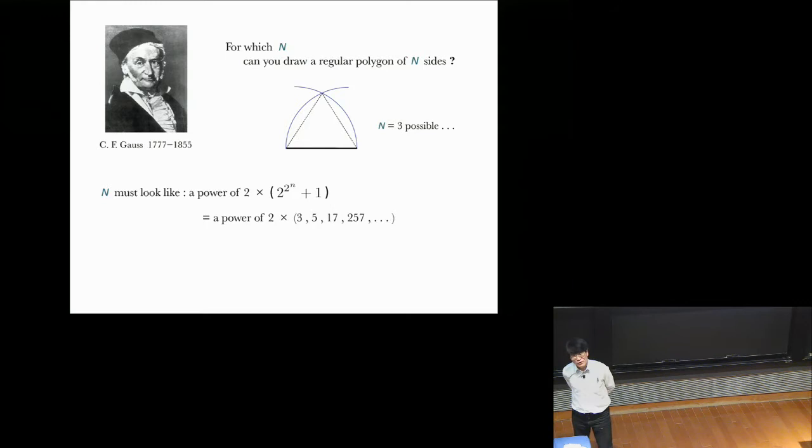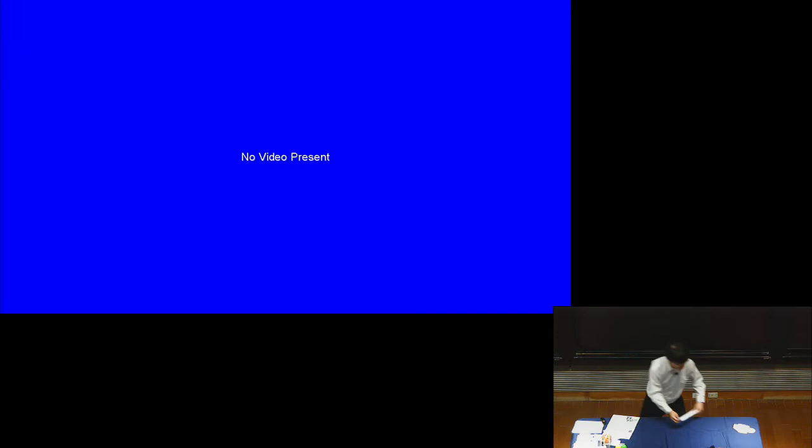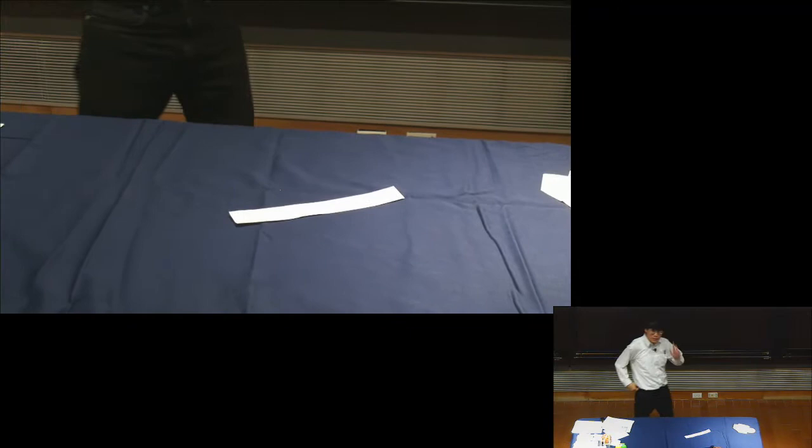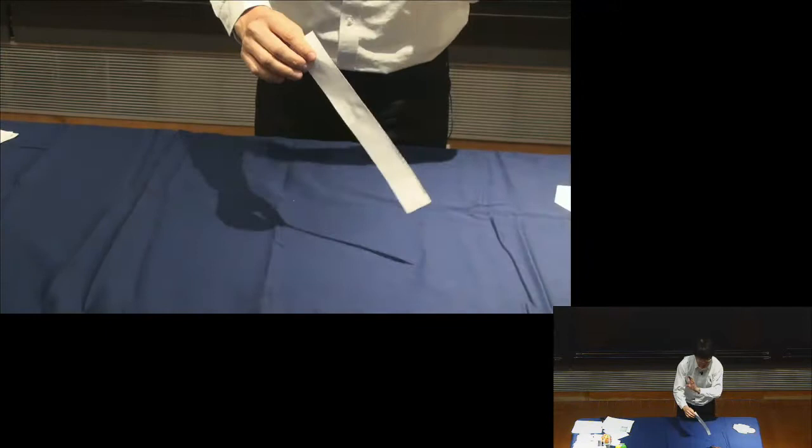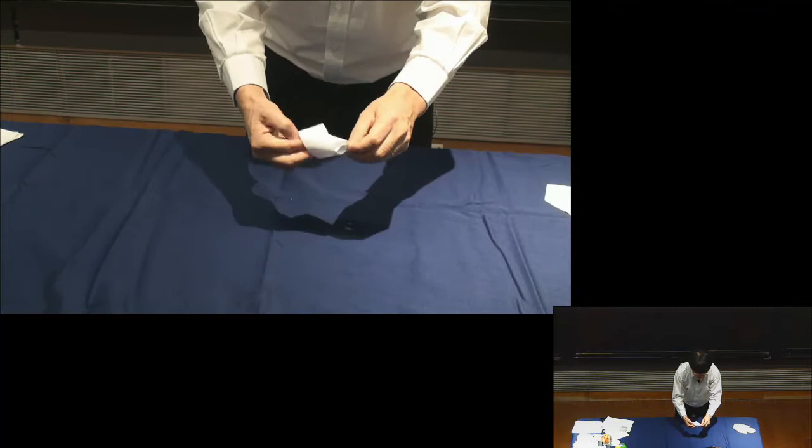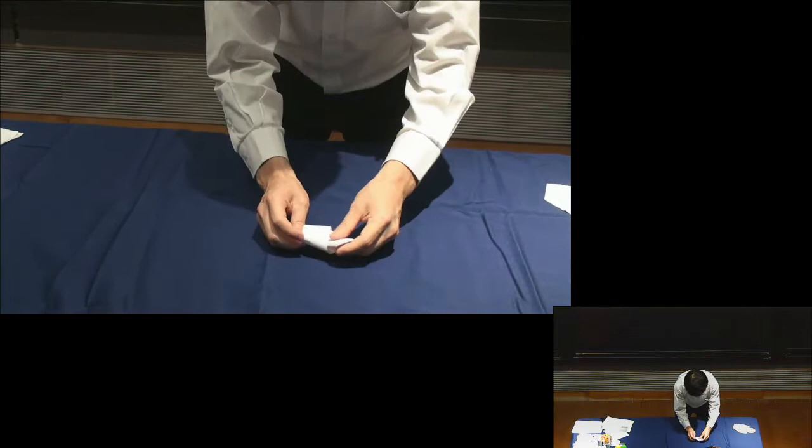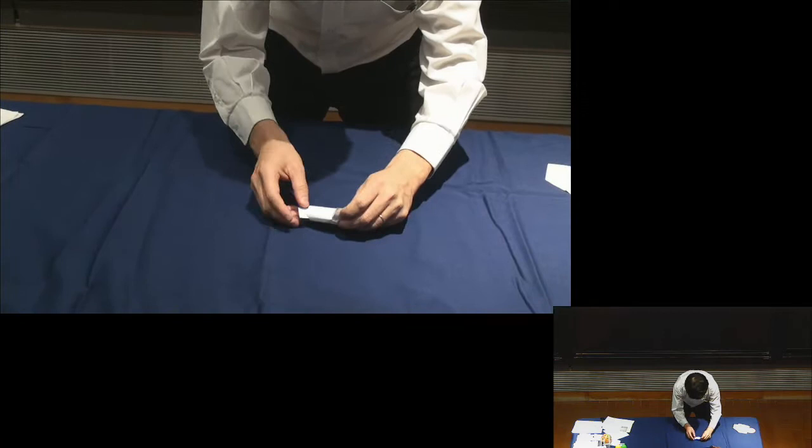And if you plug in various values of small n, you get this funny sequence of 3, 5, 17, 257, and so on. Those numbers are the numbers that are constructible as n in regular n-gon. For example, you might say, well, what about a regular 10-gon? That's OK because it's the power of 2 times 5. That's on the list. In contrast, how about regular 7-gon? You can't do this because it's not on the list. And what about regular 11-gon? You can't do that either.